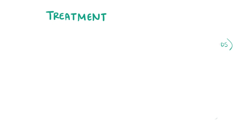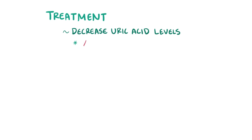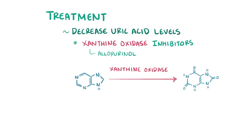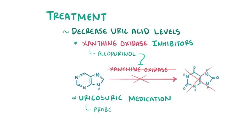There are also medications that help to decrease uric acid levels, which include xanthine oxidase inhibitors, like allopurinol. Xanthine oxidase is an enzyme involved in the breakdown of purines to uric acid, so inhibiting this enzyme results in less uric acid production. Uricosuric medications, like probenecid, increase excretion of uric acid by the kidneys.